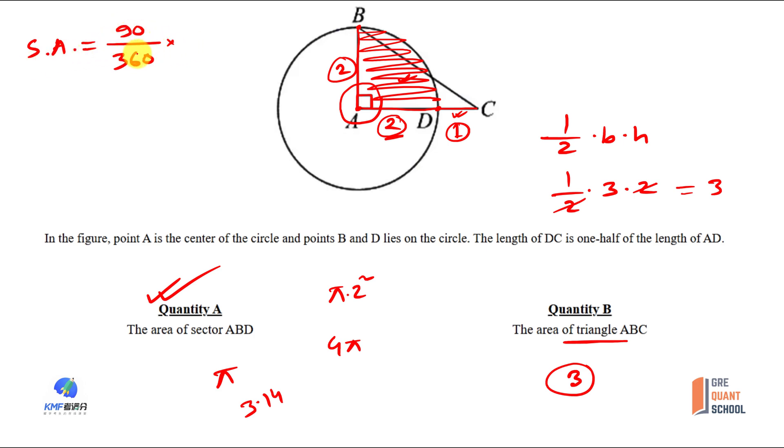The sector area is pi R squared, the circular area. The radius is 2, so 2 squared is 4. Then for 90 degrees, divide by 4. The sector area is pi.